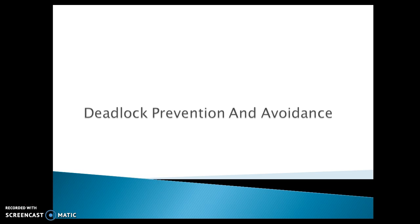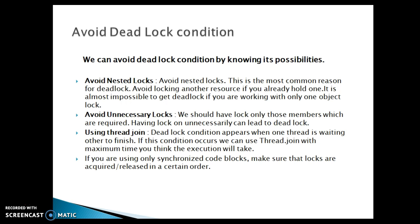In this video tutorial we'll see some points like how deadlock can be prevented and how we can avoid it. There are some points I have listed. First of all, we can avoid deadlock condition by knowing its possibilities. It's a very complex process and not easy to catch, but still if we try, we can avoid it. There are some methods by which we can avoid this condition — we can't completely remove its possibility but we can reduce it.